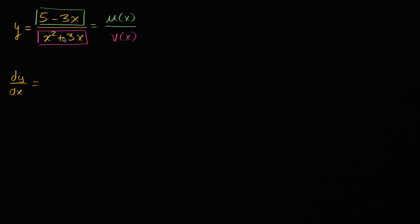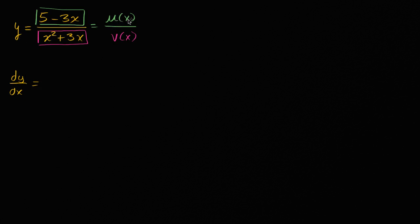I'll give you my little aside, like I always do — the quotient rule, if you ever forget it, can be derived from the product rule. We have videos for that, since the product rule is a little easier to remember. But what I can do is just say: dy/dx, if y is just u of x over v of x, I'm going to restate the quotient rule.